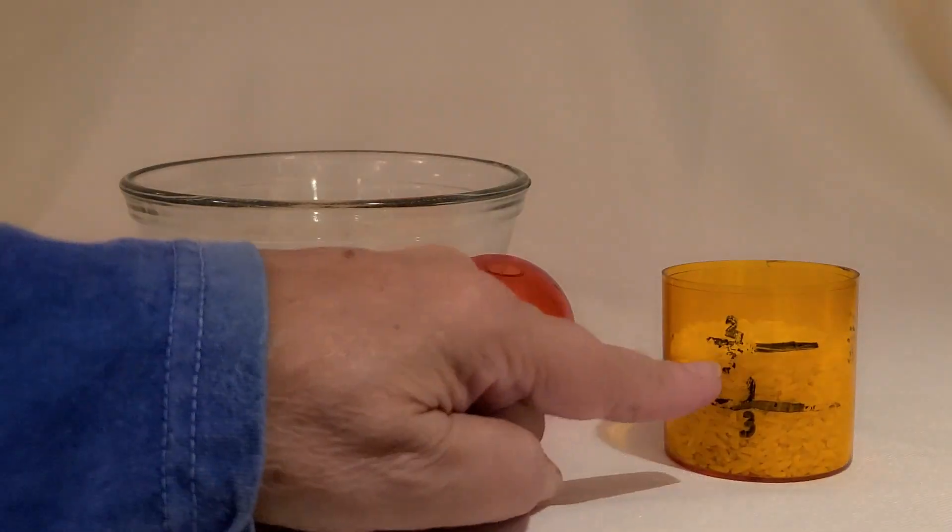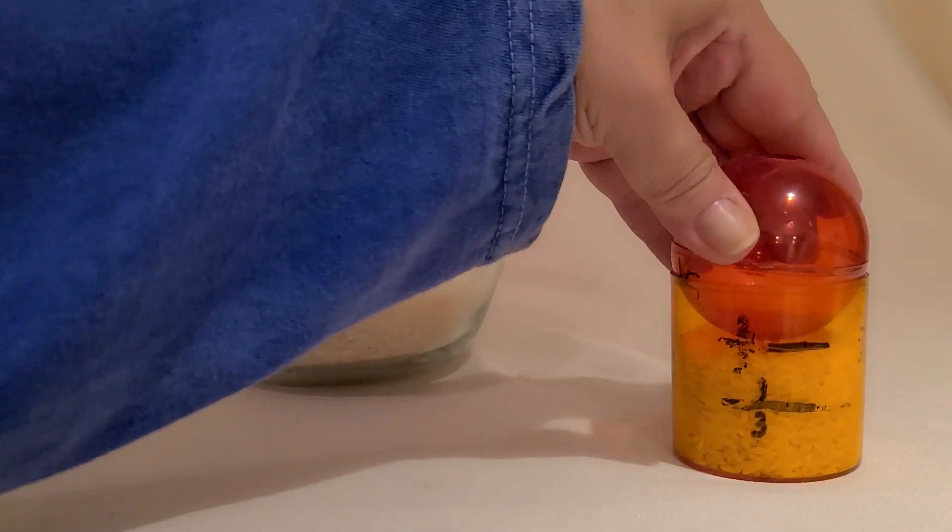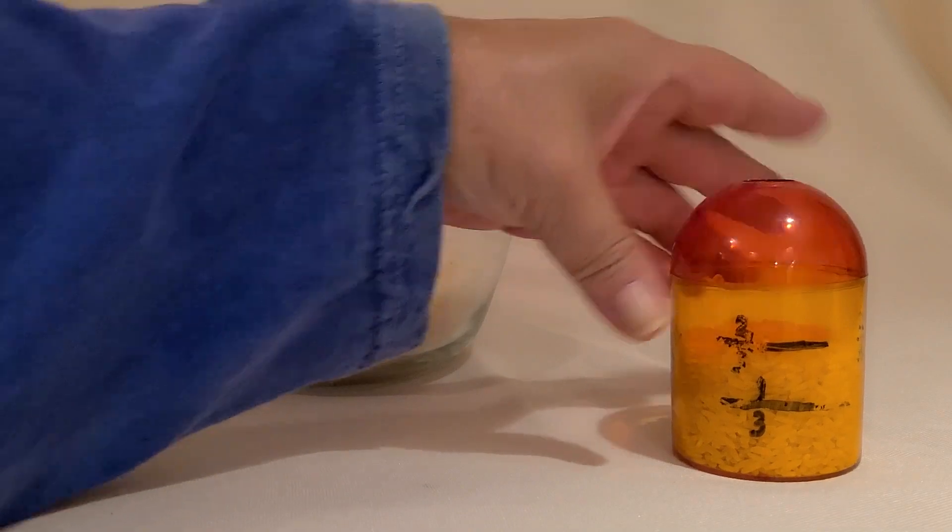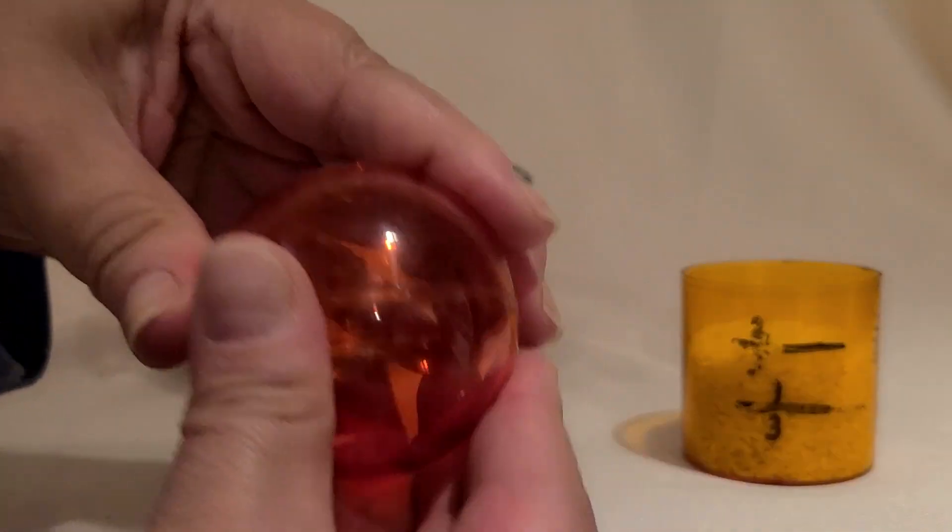It filled the cylinder two-thirds of the way and they have the same radius. If I take this apart, it matches this one perfectly. The cylinder and the sphere have the same radius or diameter.